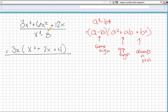So let's figure out what our a and b are for this problem. Our a will be the cube root of x cubed, or just x. Our b will be the cube root of 8, which is 2. So our a is x, and our b is 2.